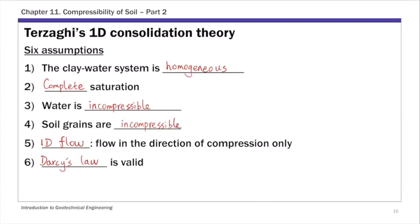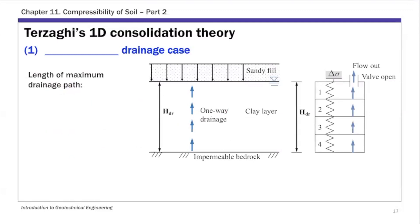Those are the six key assumptions in Terzaghi's 1D consolidation theory. In Terzaghi's 1D consolidation theory solution, I'm going to discuss two different cases. The first one is called the one-way drainage case. For one-way drainage, we have our clay layer as the consolidating layer, and you're pressing this layer from above with a sandy field on top. The only direction water can drain is one-way — flowing out from above. That's why it's called one-way drainage.